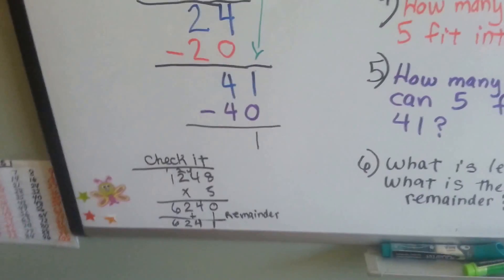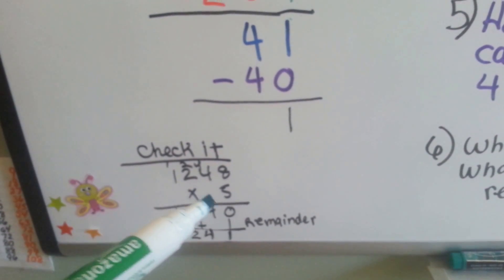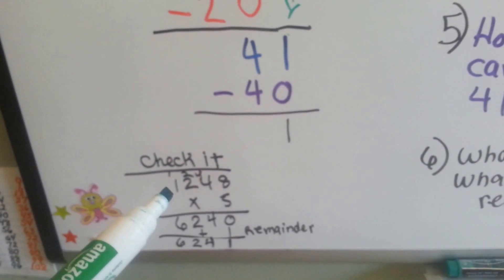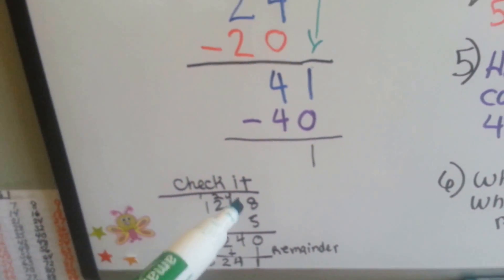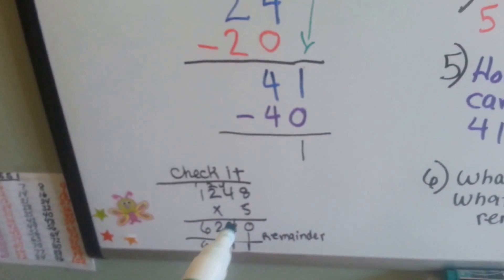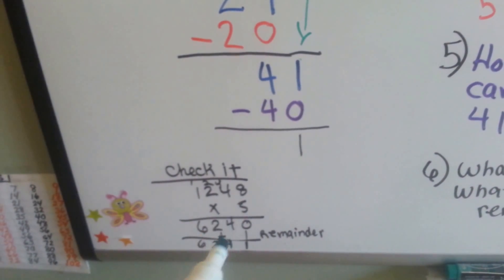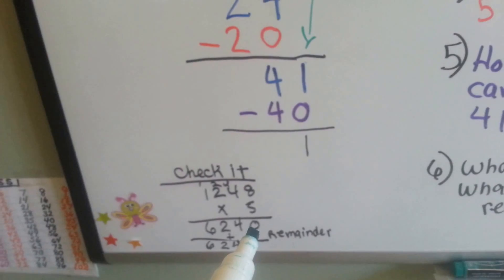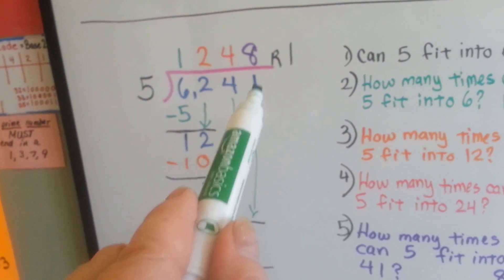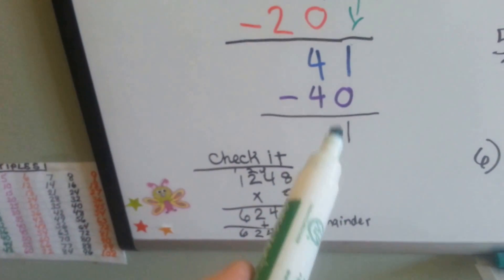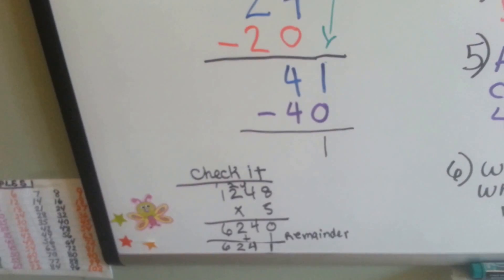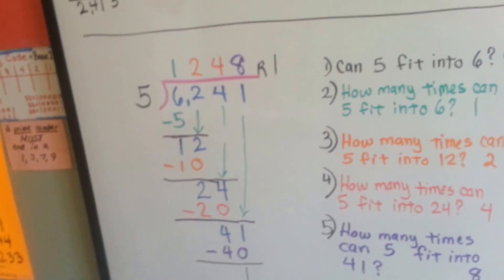So now when we check it, what we're going to do is we're going to multiply. I'm not going to go through the whole thing because I don't want the video to be too long, but we're going to multiply the 1,248 — that was our answer — times the 5 that was the divisor. We're going to get 6,240. But our dividend was 6,241, and the reason is we need to add this remainder. When we add that one little remainder, we get 6,241, and then we know we did it correctly.